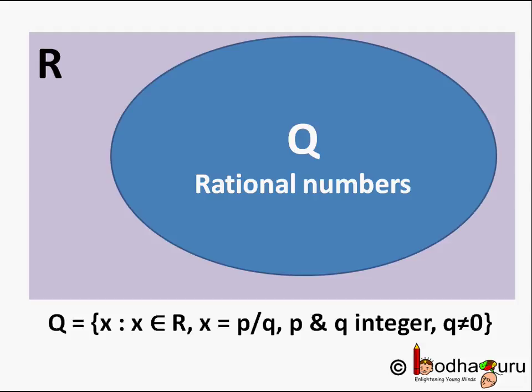All the set of numbers we use is actually a subset of it. Let us try to represent the set of real numbers now. We know real numbers contain rational numbers as well as irrational numbers. That big rectangle is the universal set R, the set of real numbers.